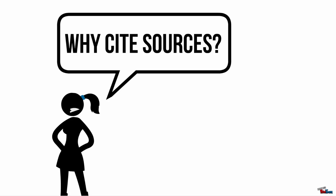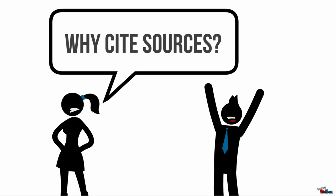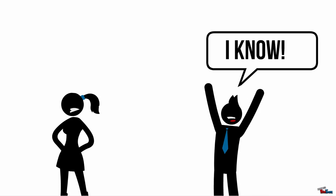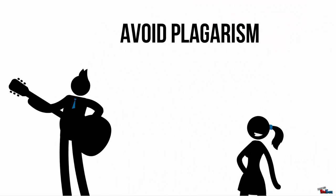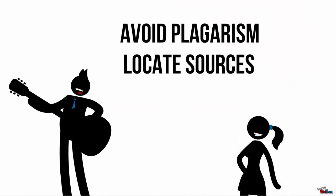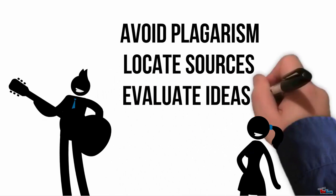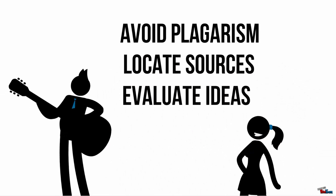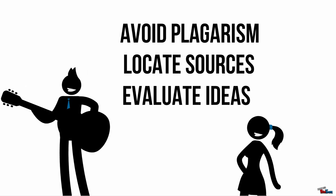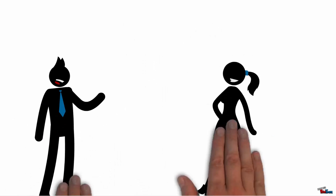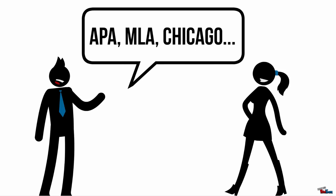Everyone knows that citations are important, but why? Part of writing a scholarly paper is incorporating and building on the ideas of other scholars. You need to cite so that you aren't plagiarizing other people's work. A citation allows your readers to locate the sources you used easily. Reading your sources allows them to evaluate and better understand your argument. There are different citation styles depending on which discipline you're in, but right now I'm going to talk about APA.